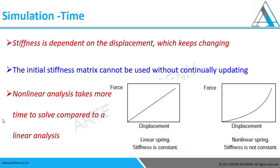Here in the picture we can see a plot between displacement and force for a linear and a non-linear spring. Stiffness is constant in linear, whereas stiffness is not constant in non-linear — it needs to be updated at each and every point in time, and that's why it takes very high computation time.